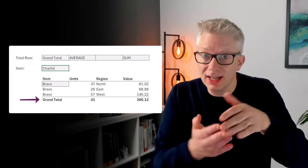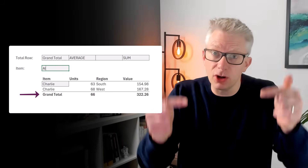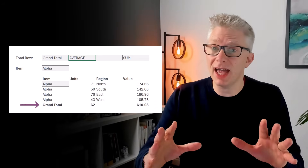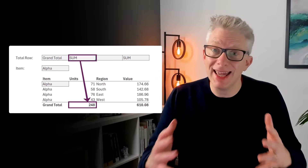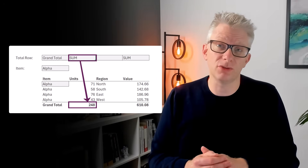In this video, we're looking at how we can add a total row onto the bottom of an array so that as that array expands or contracts, the total row also moves. Not just that, we're also going to dynamically change the calculations inside that total row. This is a mind-blowing technique - let's get started.